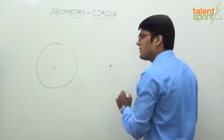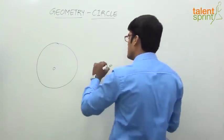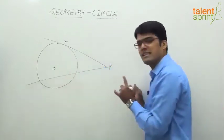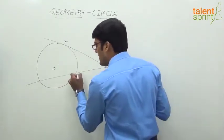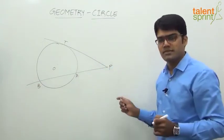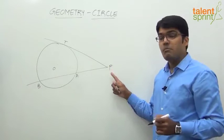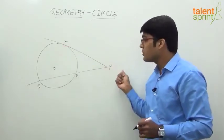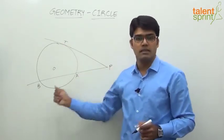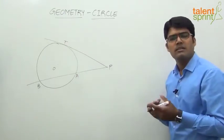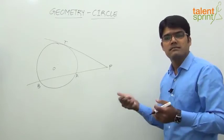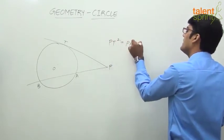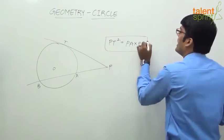Let us now look at another property based on tangent and secant. From an external point P, draw both a tangent and a secant to the same circle. The tangent is PT with point of contact T, and the secant PAB cuts the circle at two points A and B. The key property is: PT² = PA × PB, where PT is the length of the tangent from the external point to the point of contact.